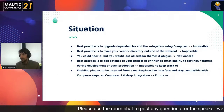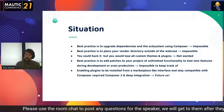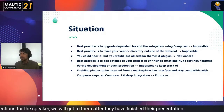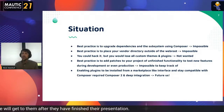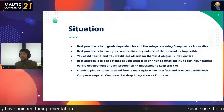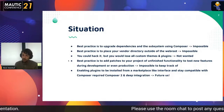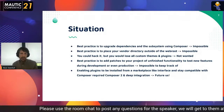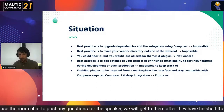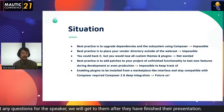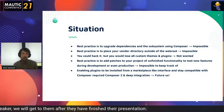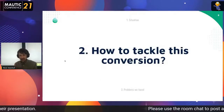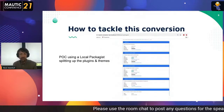This functionality was necessary to enable plugins to be installed from a marketplace-like interface. To stay compatible with Composer, it required Composer 2 and deep integration. If you want to enable or install a plugin from an external source within Mautic, you also want Mautic itself to call Composer, so everything stays in sync. That gives you a seamless end-user experience as well as a good developer experience.